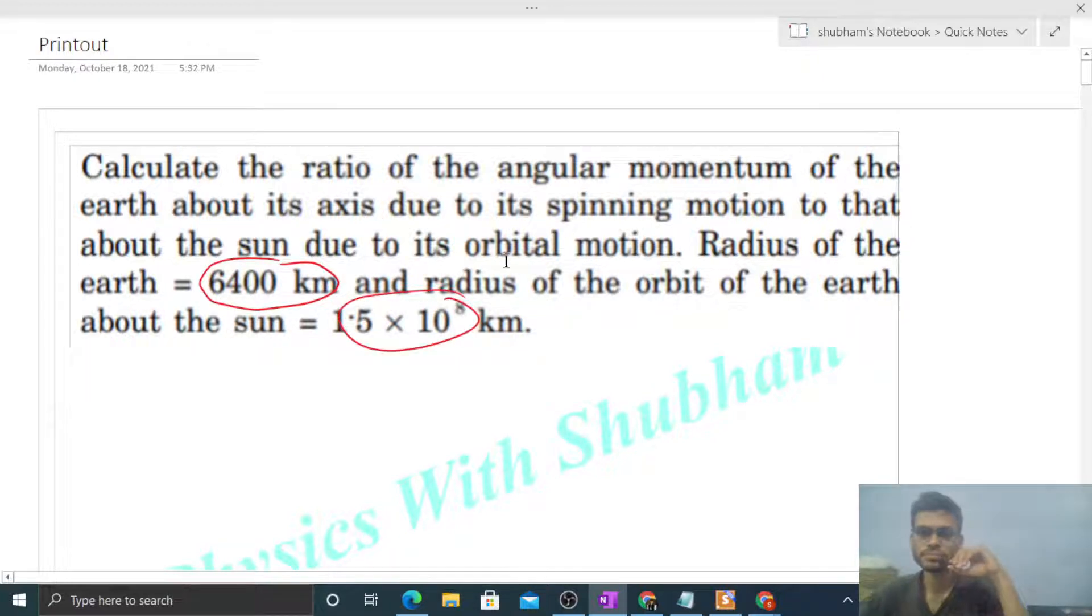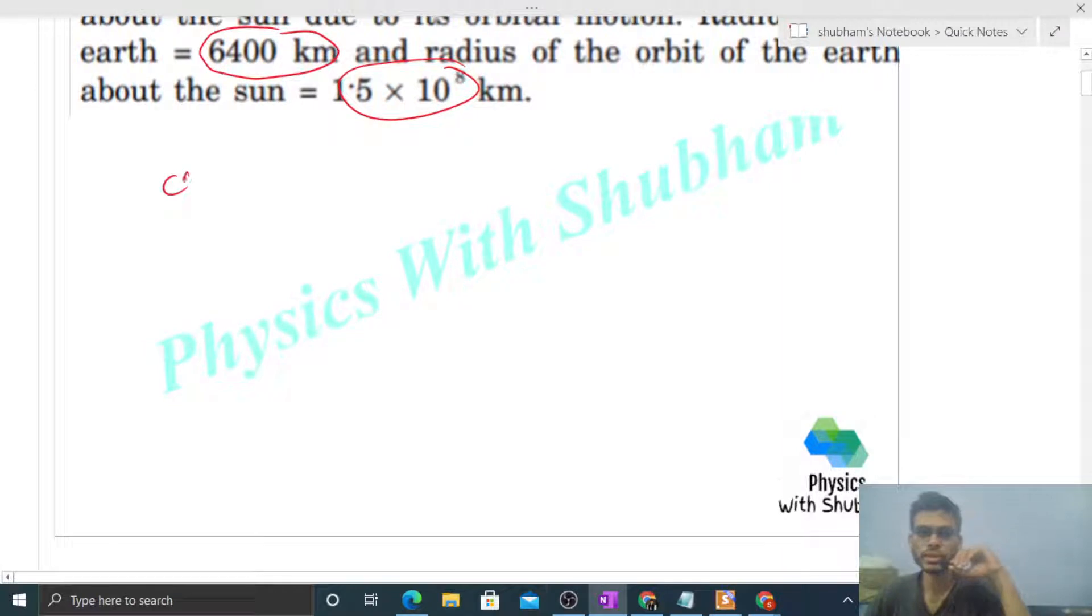So first, let's talk about case 1. In case 1, we have the Earth rotating about its axis with some angular velocity, let's say omega 1. So in this case, angular momentum will be L1, that is I1 into omega 1. What is I1? I1 is the moment of inertia of the Earth about axis of rotation.